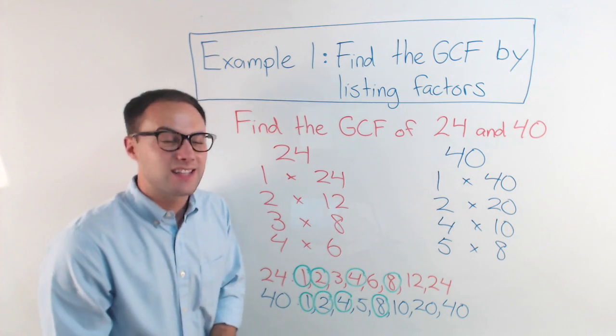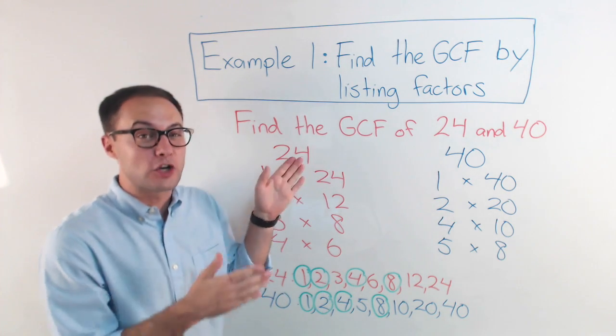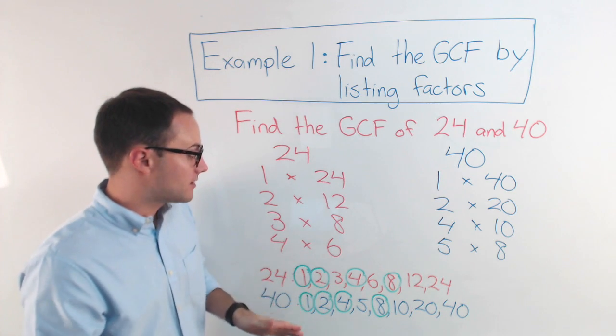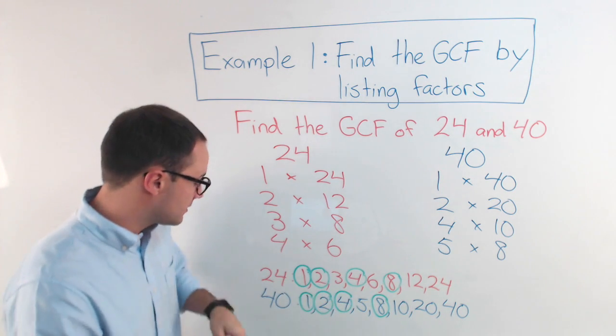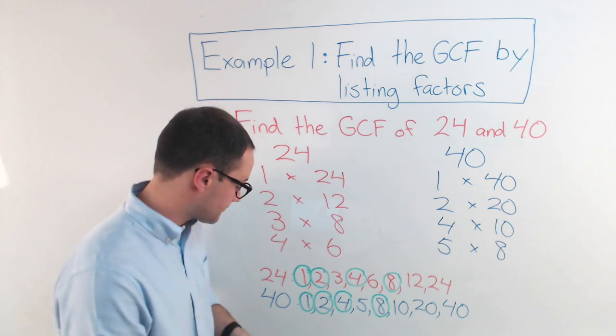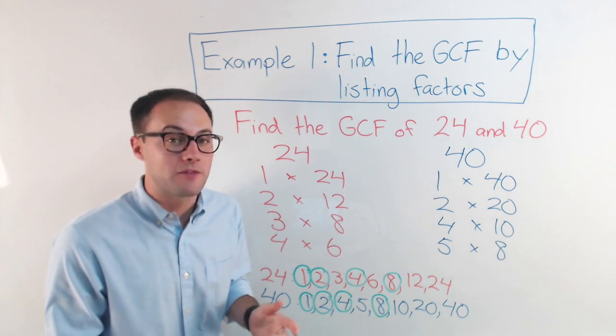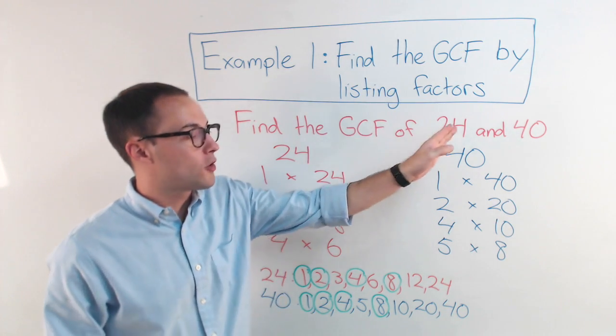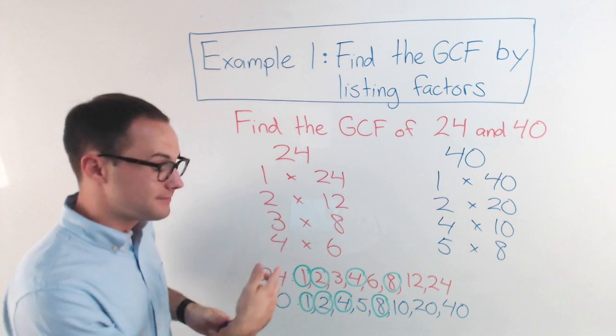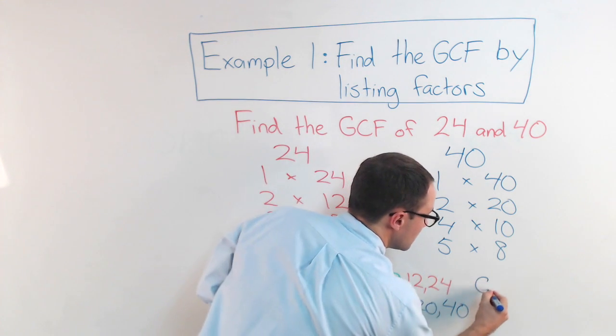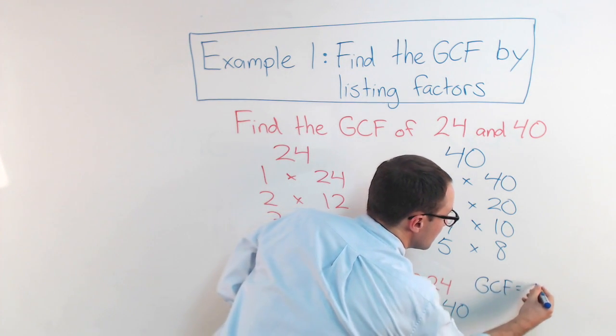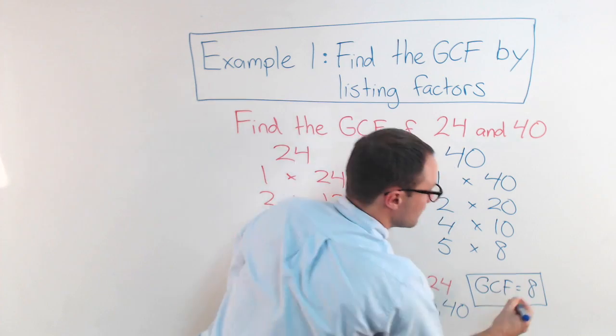And then all you've got to ask is, well, which one is the greatest of the common factors? And, obviously, 8 is the greatest. So my final answer, the greatest common factor of 24 and 40 is 8. GCF equals 8.